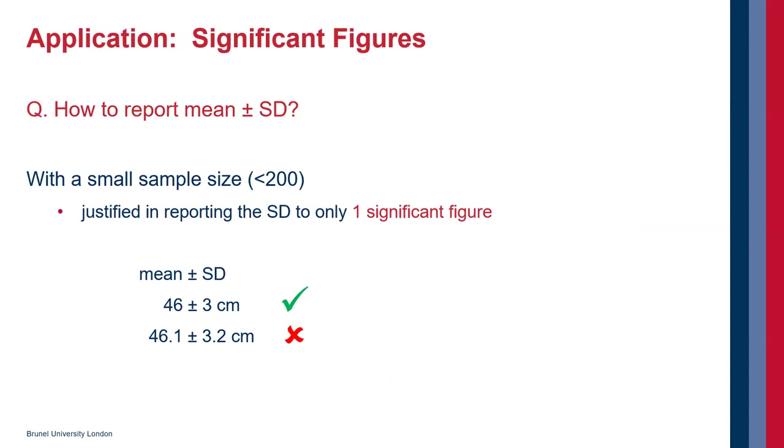There's a good practical application for this, and that is when you're trying to decide how to report a mean and a standard deviation. The previous diagram illustrated that you don't know the standard deviation very well. And really, you're only justified in reporting it to one significant figure in most sports sciences studies. So this is how you should report it: you should round the standard deviation to one significant figure. The appropriate way of reporting your mean and standard deviation is 46 plus or minus three centimeters.